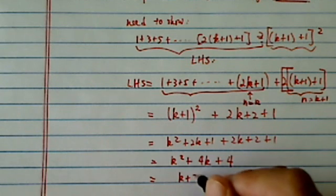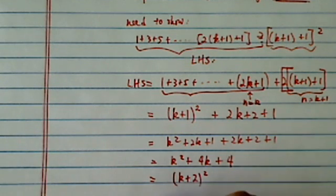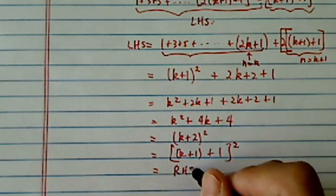And this one really is k plus 2 squared. So this is really k plus 1 plus 1 squared. That equals the right-hand side.